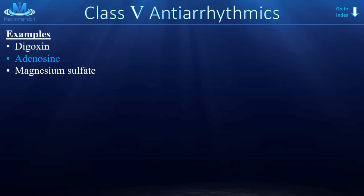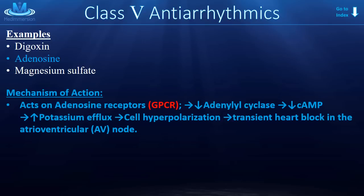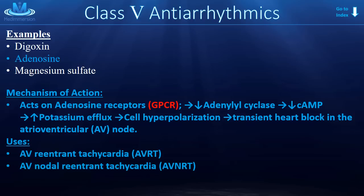The second class 5 antiarrhythmic is adenosine — a pretty cool drug to watch work in the clinic. It works on adenosine receptors, which are G-protein coupled receptors. The ultimate effect is cell hyperpolarization, leading to a transient, very short-term heart block in the AV node. Patients feel it — their heart stops for a brief second or two — and then it starts back up again in a normal sinus rhythm instead of a tachyarrhythmia. Because of its effect on the AV node, adenosine is used for supraventricular tachycardias, such as AV reentrant tachycardia or AV nodal reentrant tachycardia.